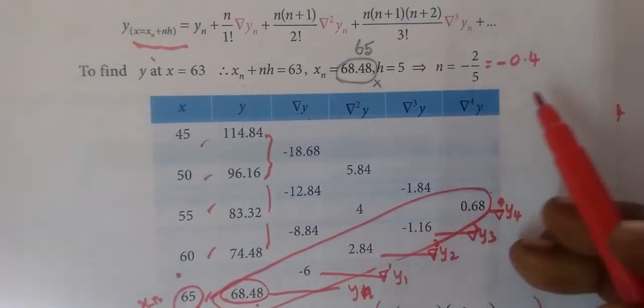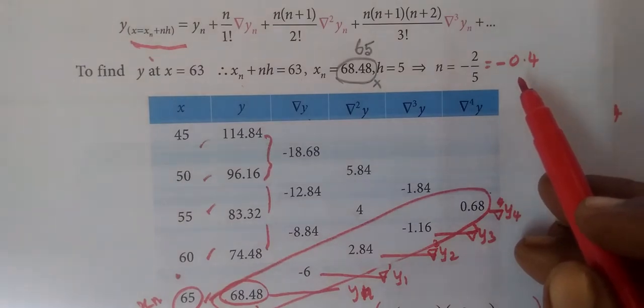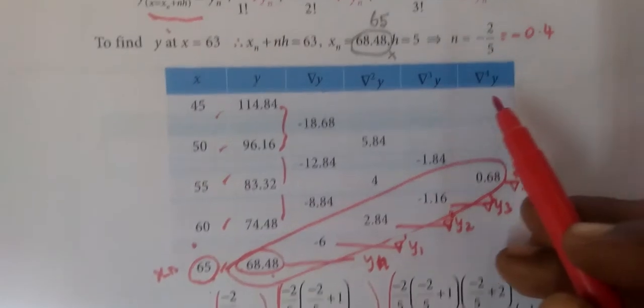After finding, n equals minus 2 by 5. This is the decimal, so minus 0.4.